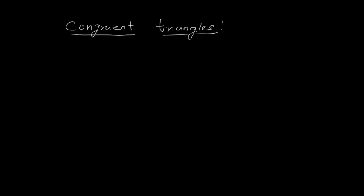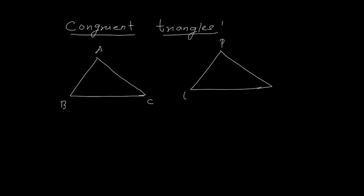Suppose I take triangle ABC and another triangle PQR. Let us say angle A and angle P are equal. If angle A is 75 degrees then angle P is also 75 degrees. If angle B is 60 degrees then angle Q is also 60 degrees. Angle C equals angle R. The corresponding angle to angle A in triangle ABC is angle P because they are equal in measure. Similarly, angle B and Q are corresponding angles, and angle C and angle R are corresponding angles.